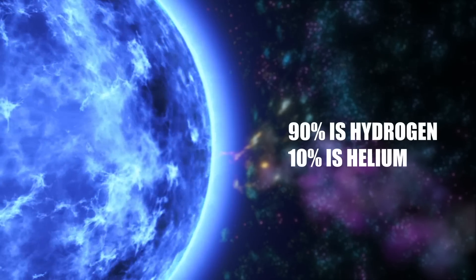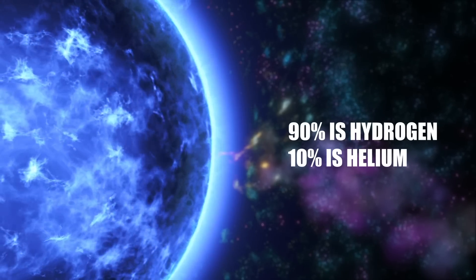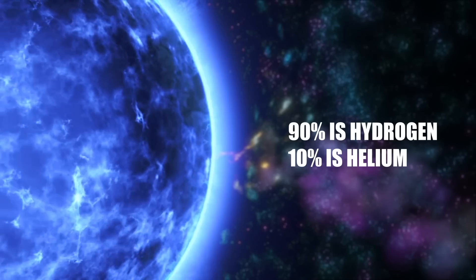Approximately 90% of Population I's makeup is hydrogen, while the remaining 10% is helium, just like the composition of the Sun.